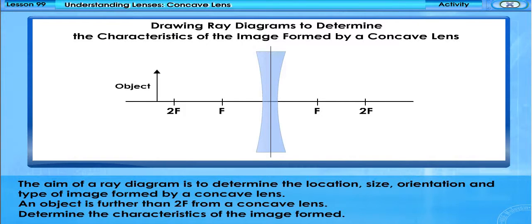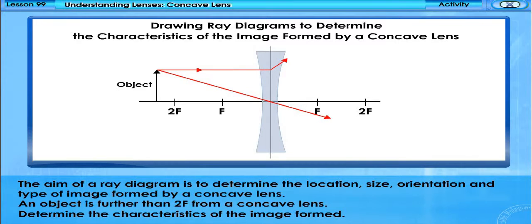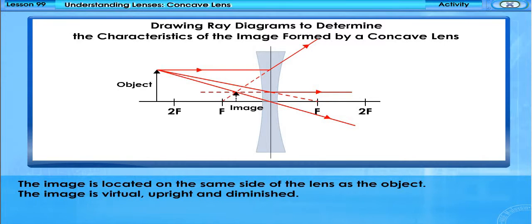The aim of a ray diagram is to determine the location, size, orientation and type of image formed by a concave lens. An object is further than 2F from a concave lens — determine the characteristics of the image formed. The image is located on the same side of the lens as the object. The image is virtual, upright and diminished.